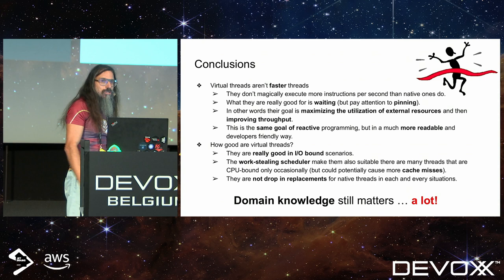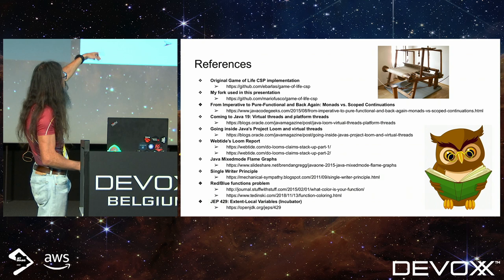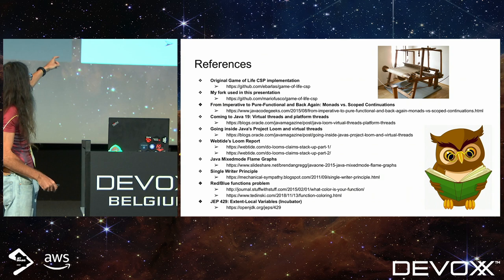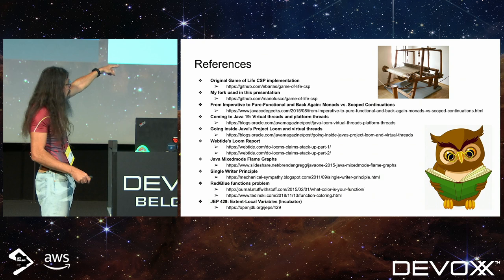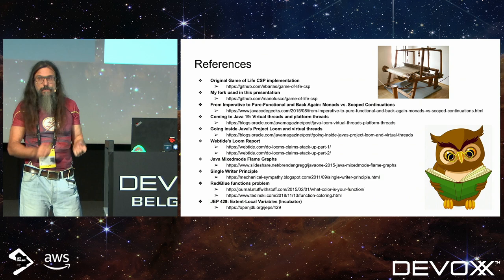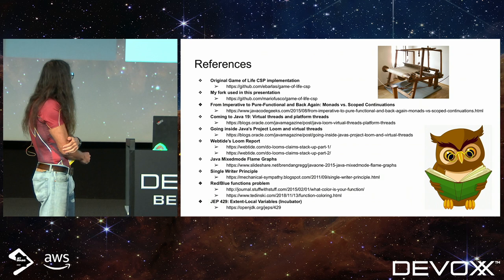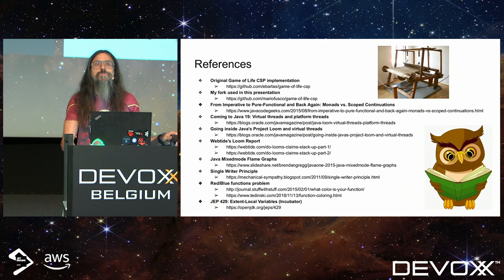Here are a few references: a link to the original Game of Life implementation, a link to my fork with all benchmark results, articles I read while preparing this presentation, and the single writer principle article explaining the high-performing channel implementation. That's all I have — thank you.